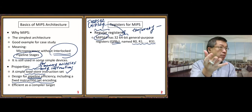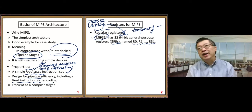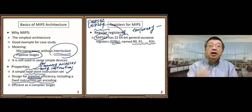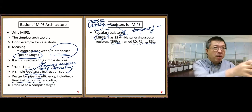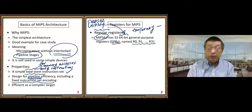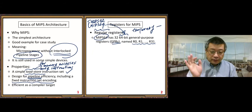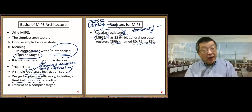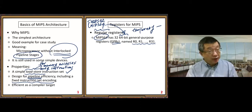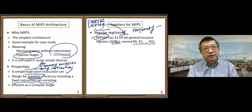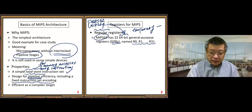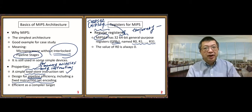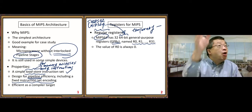Right now we assume we use MIPS 64 by default. If we say MIPS without specifying 32 or 64, we mean MIPS 64 — that's our default case. Later I will talk a bit more about this 32 to 64 background. Next special property: the value of R0 is always 0.